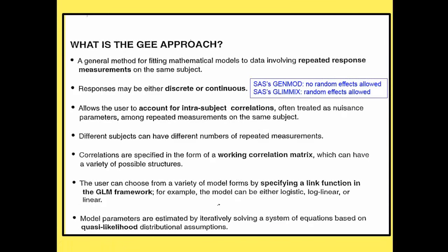GEE is a general method for fitting mathematical models to data involving repeated response measurements on the same subject, where responses can be either discrete or continuous. GenMod is a way of doing GEE in which no random effects are allowed — only fixed effects. There are some things GenMod has that Glimmix — which allows random effects — doesn't have, so there are reasons you may want to use GenMod in addition to or instead of Glimmix. These are the two programs we'll learn about.